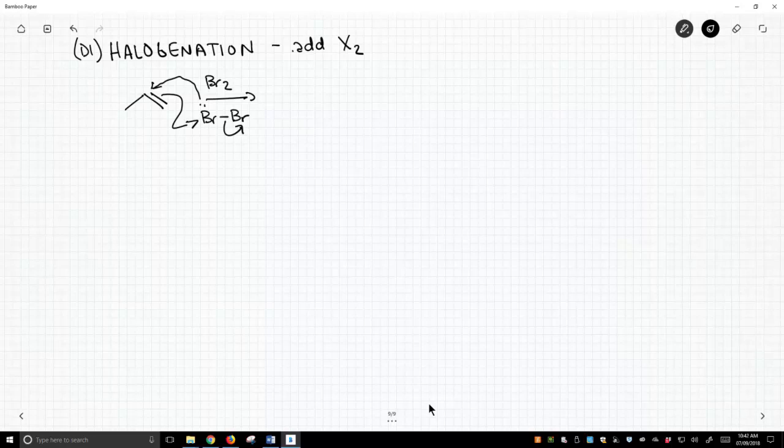So all three of these arrows are required for the halogenation reaction. If you trace these bonds, the Br-Br bond is going to be broken and this bromine is now attached to both carbons of our alkene. It looks like this.